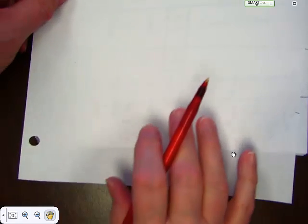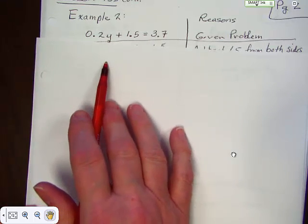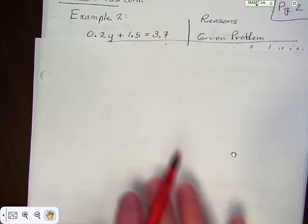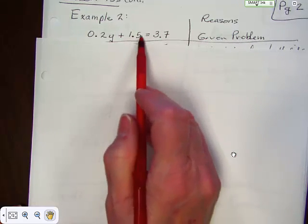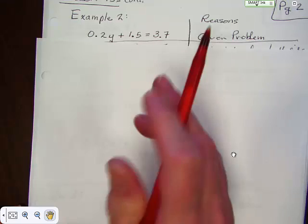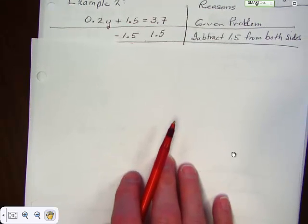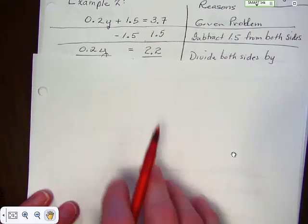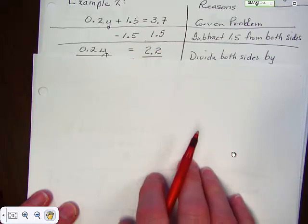Here is another example. This one has decimals: 0.2y plus 1.5 equals 3.7. They have decimals in there — it's kind of touchy, you've got to watch that. It is the given problem. This is a plus 1.5, so that would be the first thing I would do — get rid of that 1.5. So you have to subtract 1.5 from both sides. And there's your justification. When you do that, you get 0.2y equals 2.2.